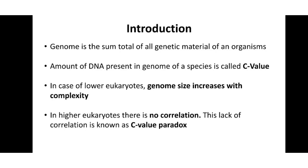In lower eukaryotes, the genome size increases with complexity — that is, the amount of DNA increases with the increasing complexity of an organism. However, in higher eukaryotes, we cannot relate genome size to complexity. For example, the salamander, which belongs to the Amphibia family, contains more than 10 times the amount of DNA found in the human genome, yet salamanders are less complex than humans.